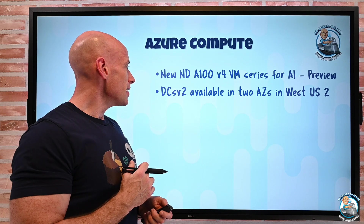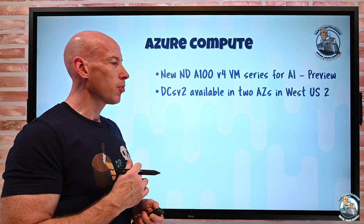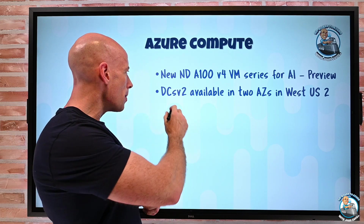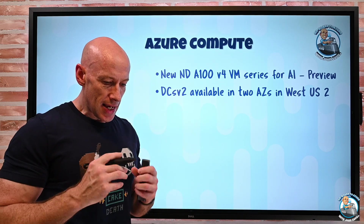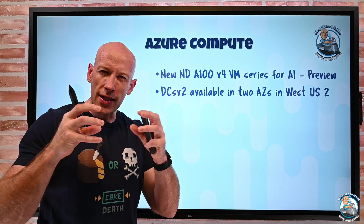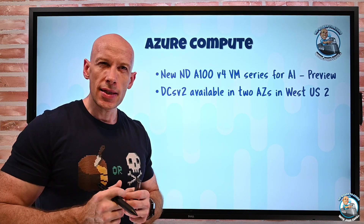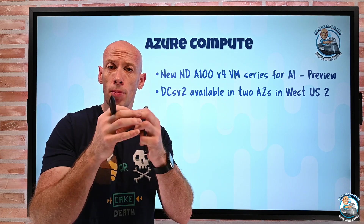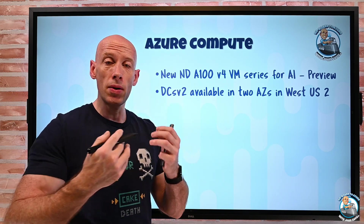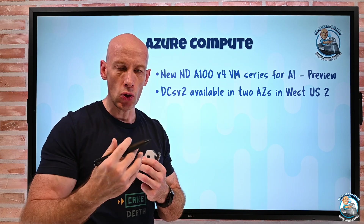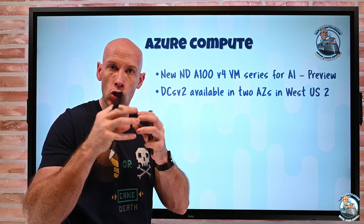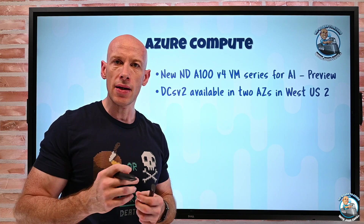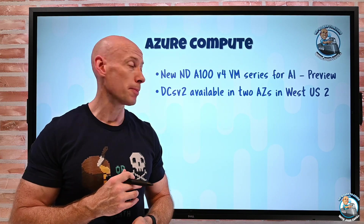The DC SV2 is now available in two availability zones in West US 2. The DC series has Software Guard Extensions (SGX), which lets me create secure enclaves to run processes where data is encrypted even while it's being used — those instructions are encrypted. Now with two AZs, I can have resiliency from any data center level failure.